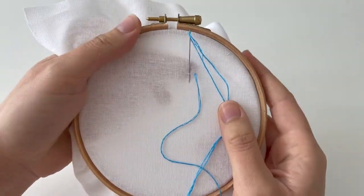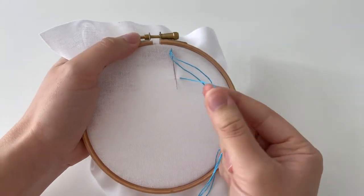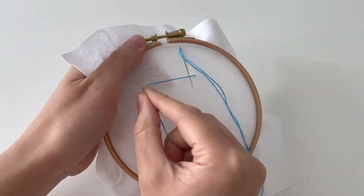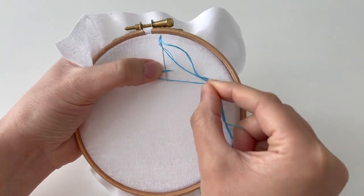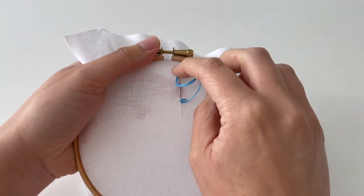And what you need to do is go down through the fabric just above the line and come back up just below the line, but as you can see I haven't actually brought my thread through. I'm going to loop it round like so, and then push it through.